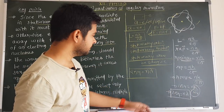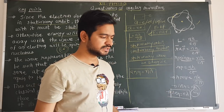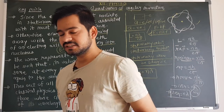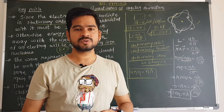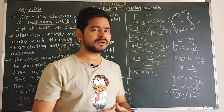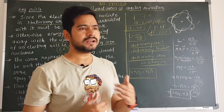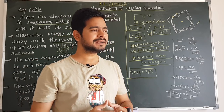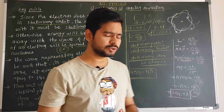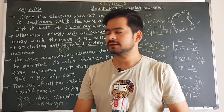So both equations — L = nh/2π and 2πr = nλ — express quantization. The electron selects only those orbits whose circumference is an integer multiple of the de Broglie wavelength, or equivalently, whose angular momentum is an integer multiple of h/2π.